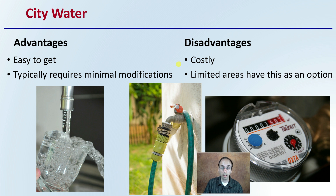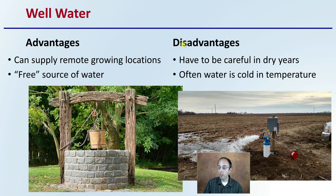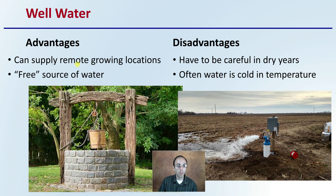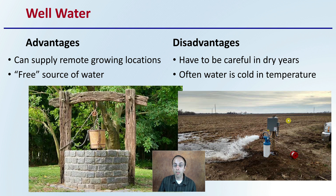There is also well water. Well water can supply plants in very remote locations — you can potentially have a well dug or bored down and irrigate at a location that might be very distant. It's also a free water source, and I put free in quotes because there are some costs associated with the well itself — digging it, maybe running power to it — but as far as the cost of the water itself, it's basically free. The disadvantage is you have to be careful in dry years depending on how deep the well is and what its replenish rate may be.